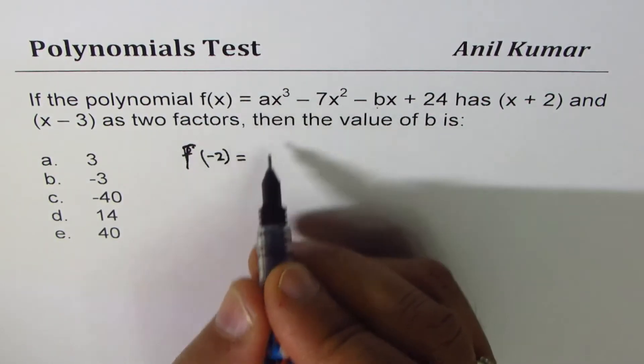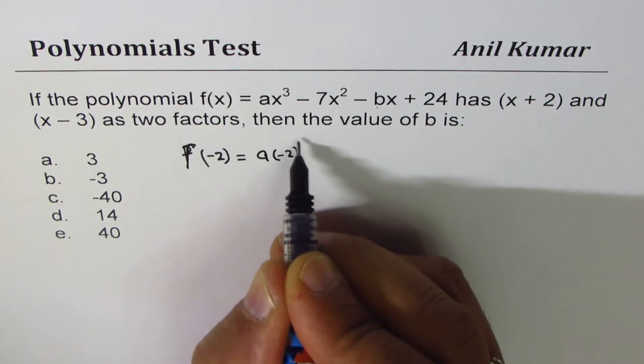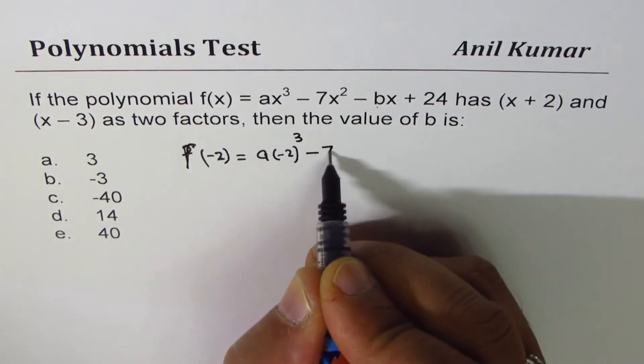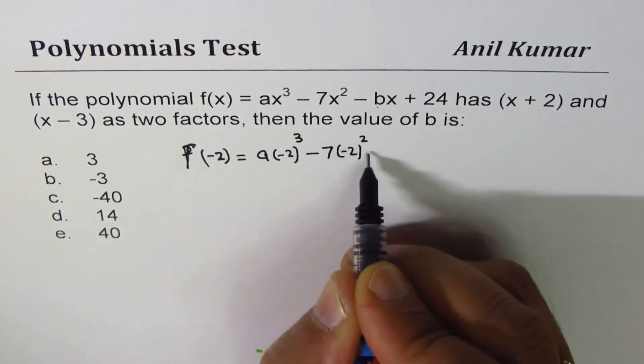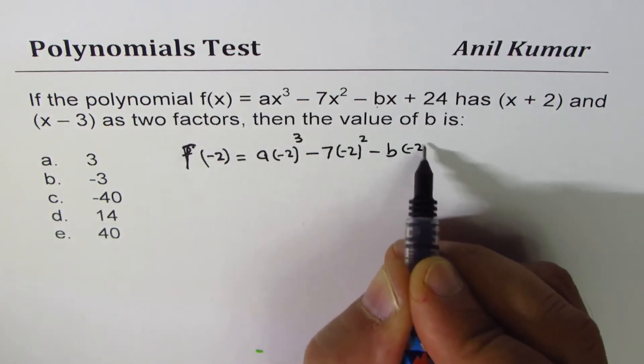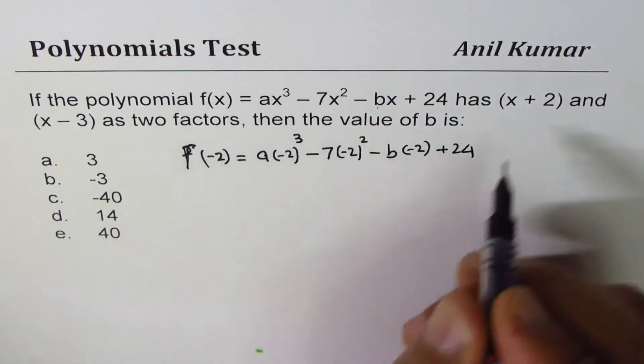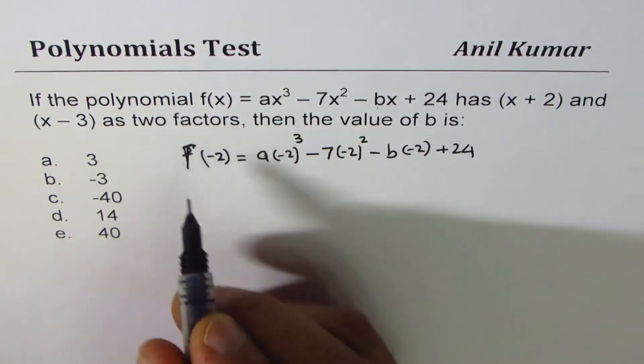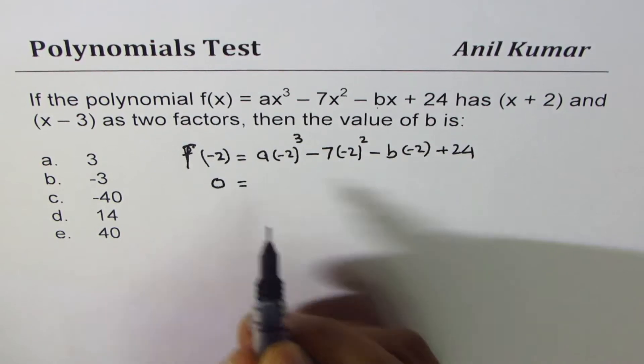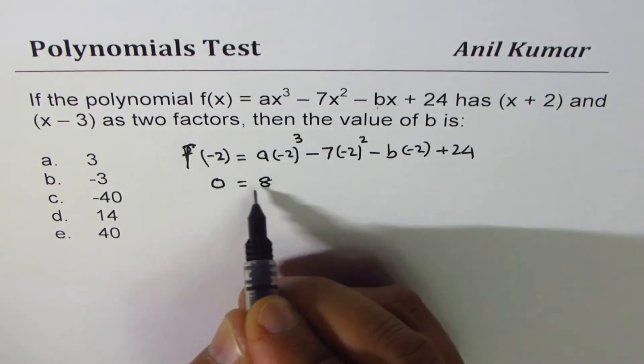So, if I substitute -2 here, I get a(-2)³ - 7(-2)² - b(-2) + 24. So, f(-2) is 0, since they are factors. So, let's write 0 equals to,